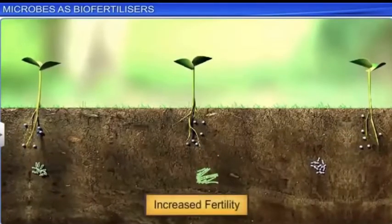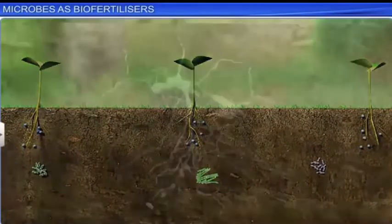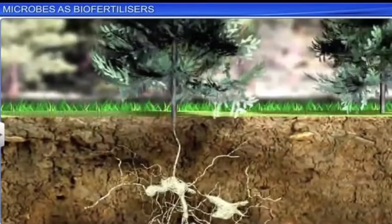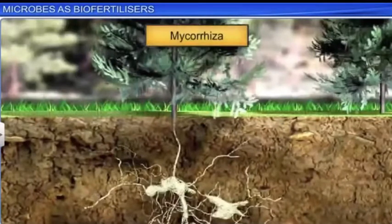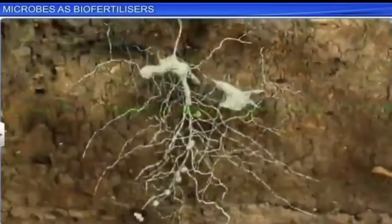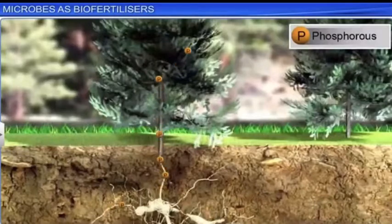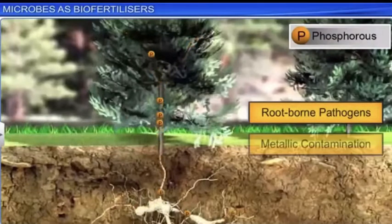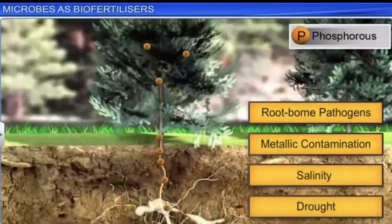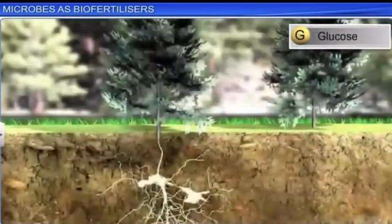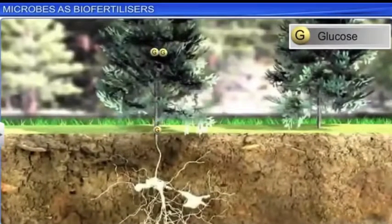Even fungi, specifically those belonging to the genus Glomus, form symbiotic associations like mycorrhiza with the roots of vascular plants. Fungi help the plant absorb phosphorus from the soil. In addition, these plants also show resistance to root-borne pathogens, metallic contamination, salinity, and drought. In return, fungi receive carbohydrates such as glucose from the plants.